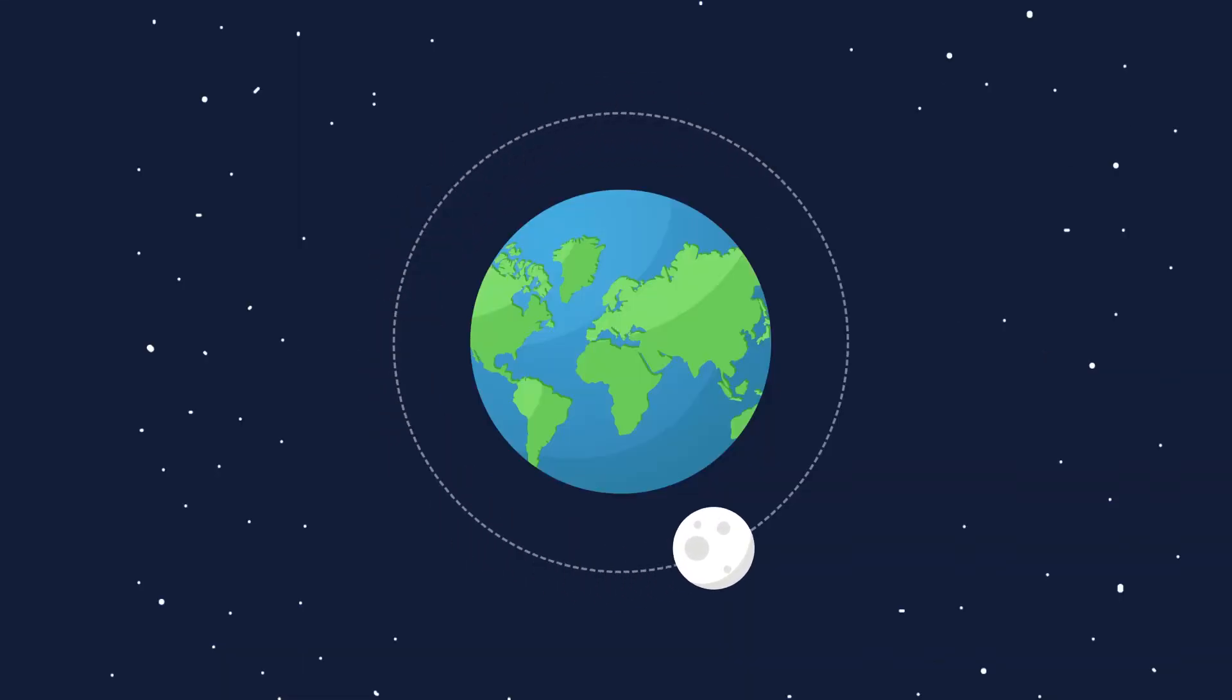So, when centripetal force, which in this case is gravity, is pulling the Moon towards Earth, the centrifugal force is moving it away from Earth and giving it its horizontal motion.